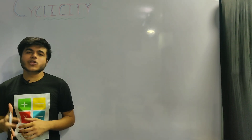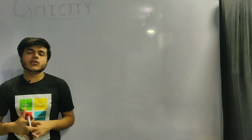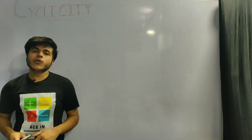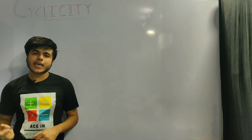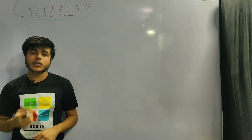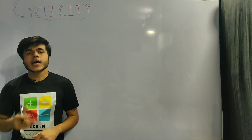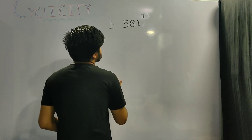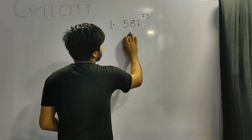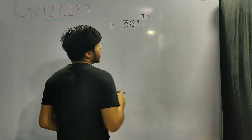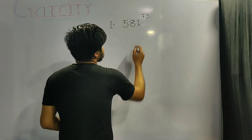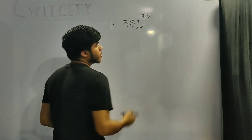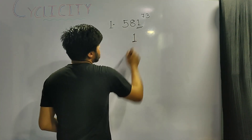In the exam, questions will never ask about cyclicity directly — they will just ask for the unit digit. Let us find out with some examples. Our first question: find the unit digit of 581 raised to the power 73. I can clearly see the unit digit is 1, so I can directly write the answer as 1.